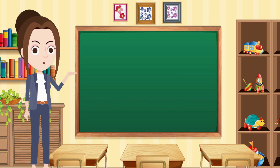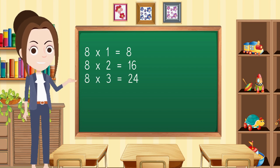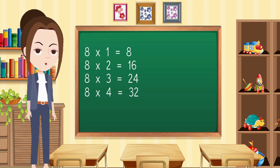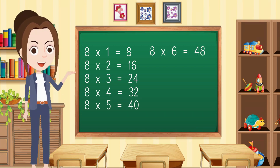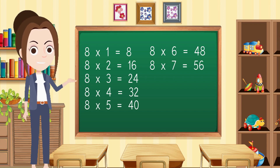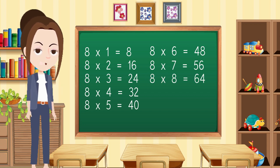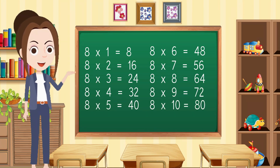Table of 8. 8 1s are 8, 8 2s are 16, 8 3s are 24, 8 4s are 32, 8 5s are 40, 8 6s are 48, 8 7s are 56, 8 8s are 64, 8 9s are 72, 8 10s are 80.